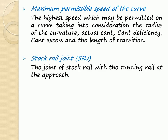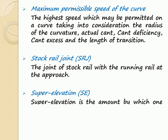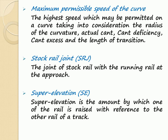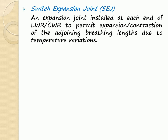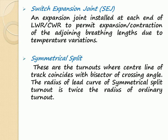Stock Rail Joint: The joint of the stock rail with the running rail at the approach. Super Elevation: Super elevation is the amount by which one rail is raised with reference to the other rail of the track. Switch Expansion Joint: An expansion joint installed at each end of LWR/CWR to permit expansion and contraction of the adjoining breathing lengths due to temperature variations. Symmetrical Split: These are the turnouts where the centre line of track coincides with the bisector of the crossing angle. The radius of the lead curve of a symmetrical split turnout is twice the radius of an ordinary turnout.